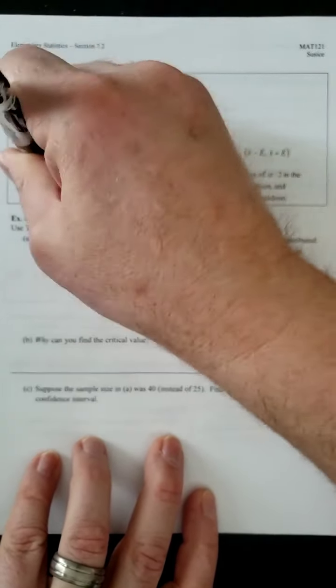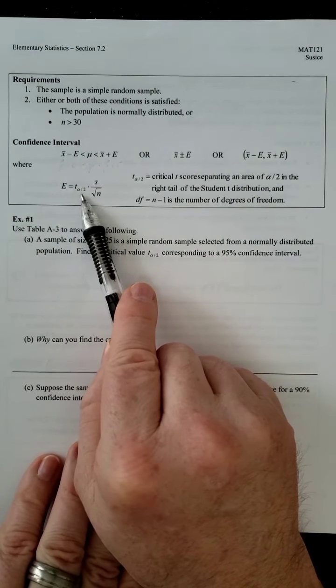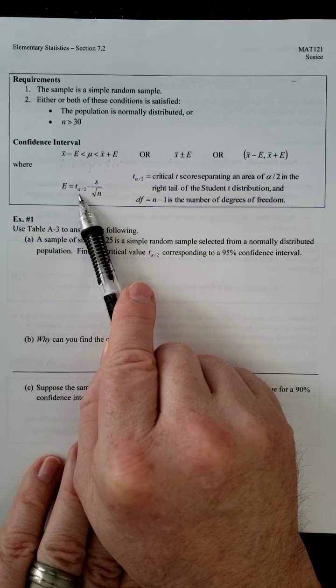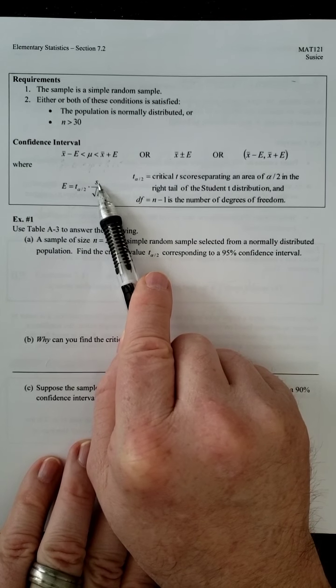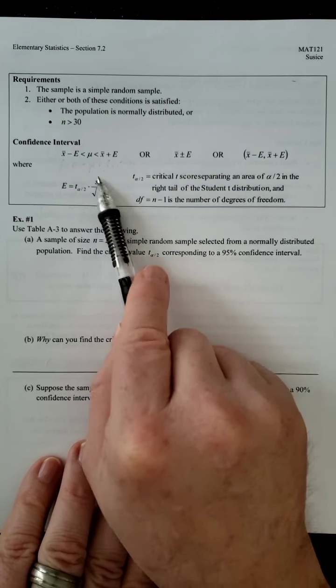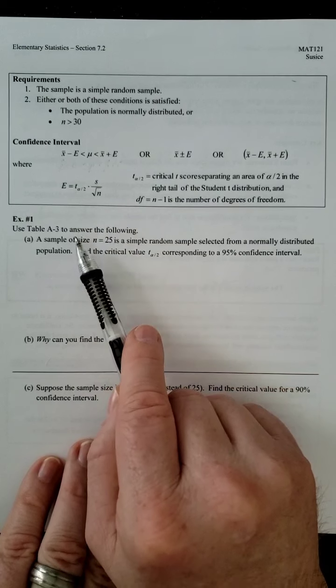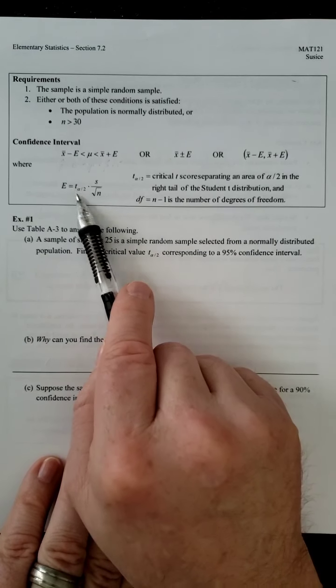Now, the formula for your error is this. So it involves our T score, which we're going to see how to do in a second, our sample standard deviation, which we should know, and we should also know what N is. So this stuff is going to be given to you. So you'll be able to have that at your fingertips. T, though,